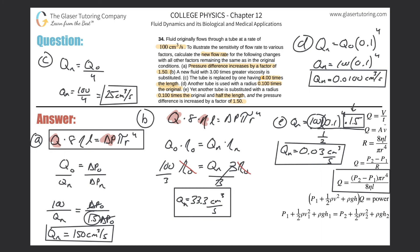Whatever the radius changes by, raised to the fourth power, the pressure is going to have to change by that same amount to maintain the same flow rate. So it is extremely problematic.